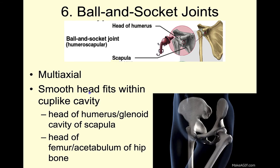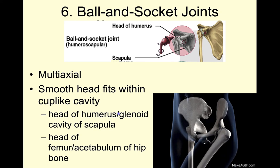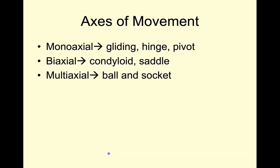Last we have our multiaxial ball and socket joint. This is where the head of our humerus or even our femur is fitting into this cup-like depression on our scapula called the glenoid cavity. Just a quick review of the axes of movement: monoaxial meaning one plane of movement — our gliding, hinge, and pivot joints; biaxial is our condyloid and our saddle joints; and multiaxial is our ball and socket joint.